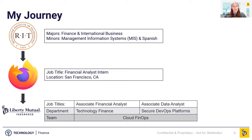During my time at RIT, I did a summer internship with Mozilla in San Francisco as a financial analyst intern. This led me to have the opportunity to work with IT, real estate, and technology innovation departments to help them manage their spend. It was there that I learned I really wanted to work as an intermediary between finance and technology. Liberty Mutual somehow had the perfect job posting when I was looking — Financial Analyst in Technology Finance. It was everything I was looking for.